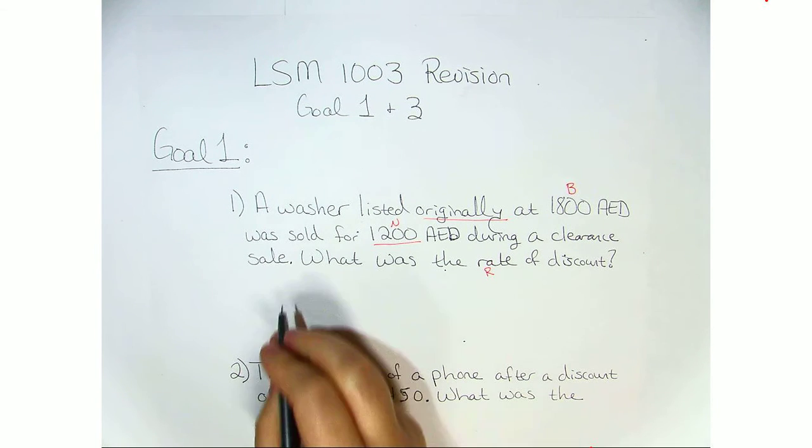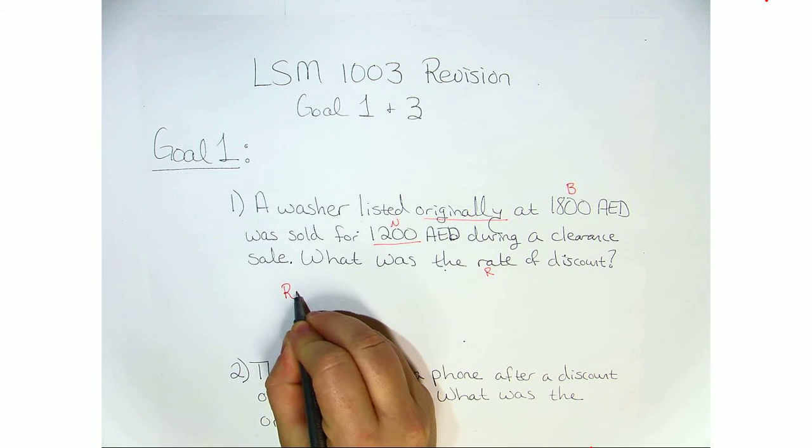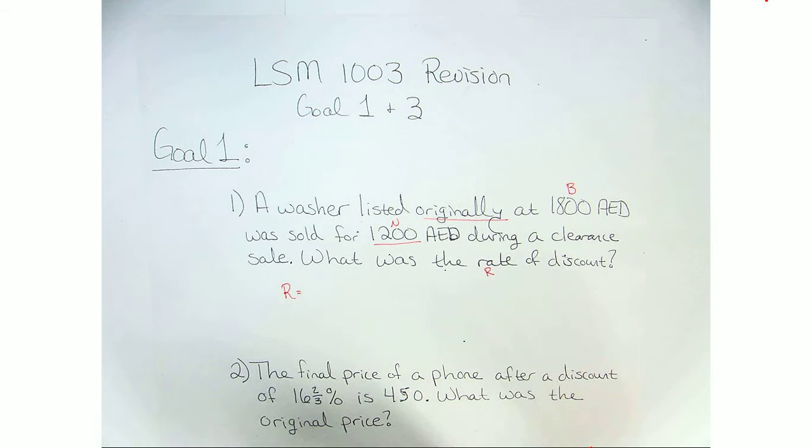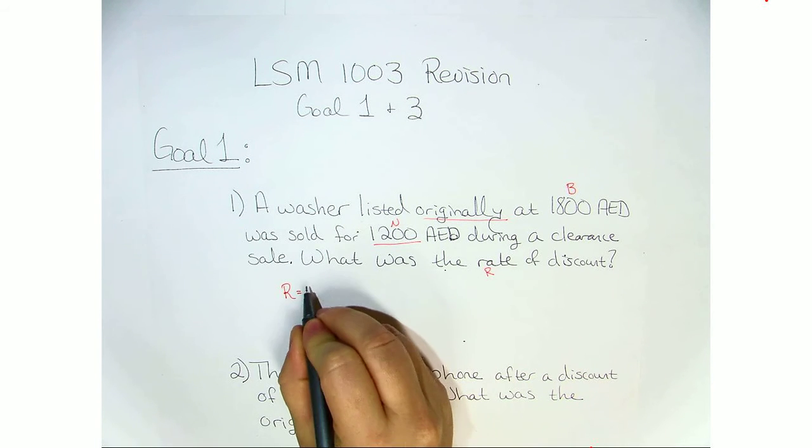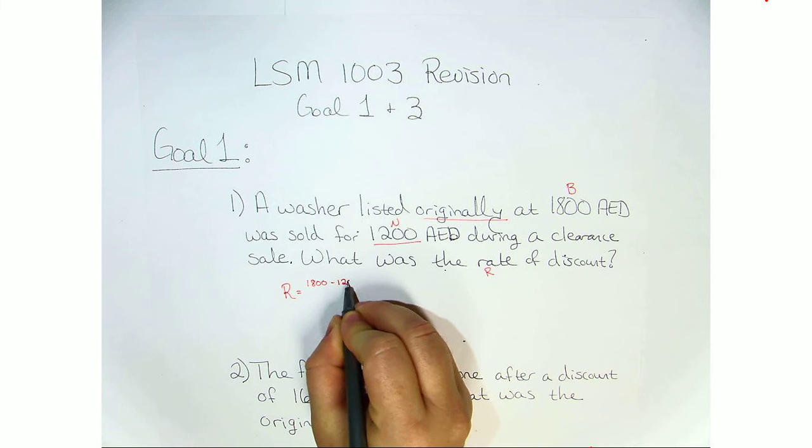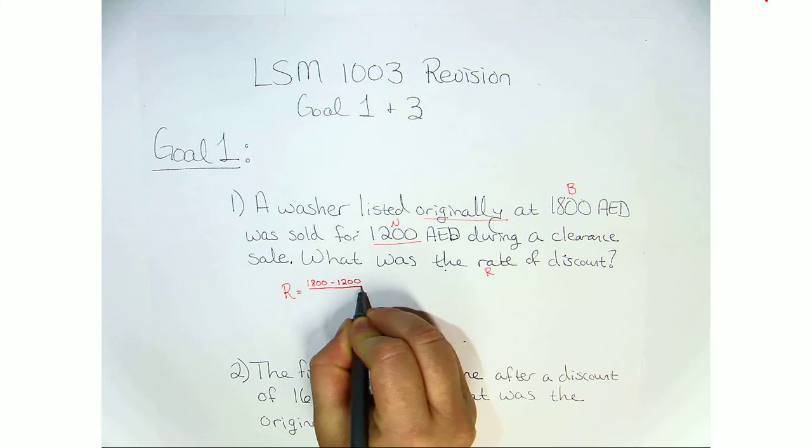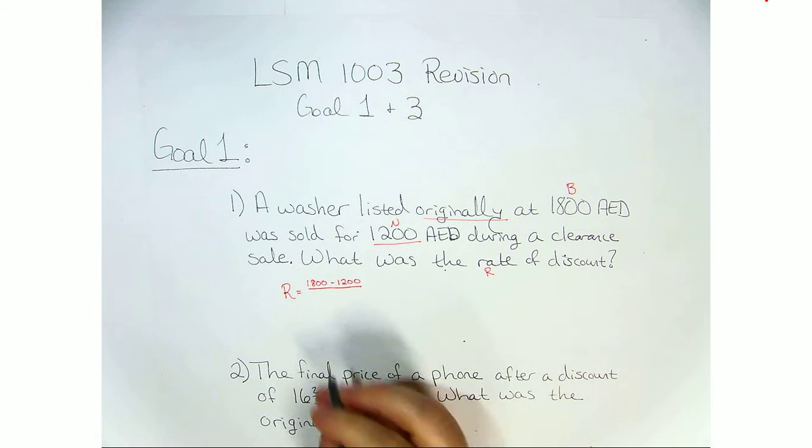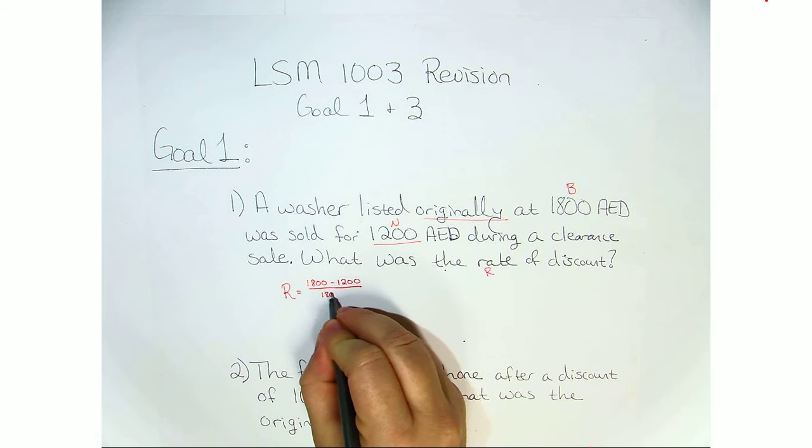When we're looking for the rate, the formula is the rate equals the change, in this case 1,800 minus 1,200 divided by the original amount, so 1,800.